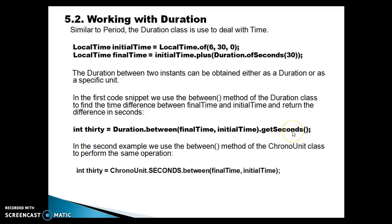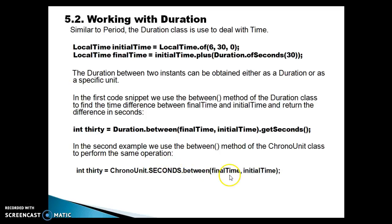You can get the difference in nanoseconds as well. We tell the API to give us the time in seconds using 'getSeconds', which returns the time difference between the two times in seconds. In the second example, we use the 'between' method of the ChronoUnit class to perform the same operation — ChronoUnit with seconds, calling 'between' and passing final and initial time, returning almost the same result.